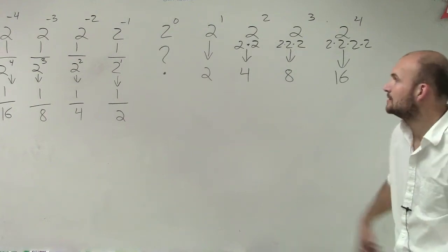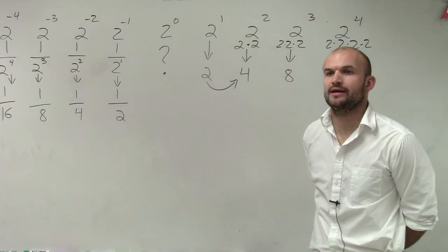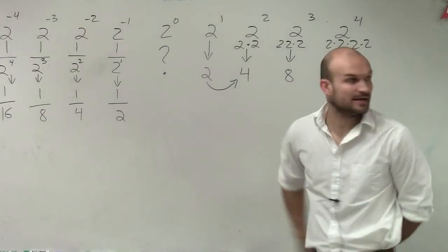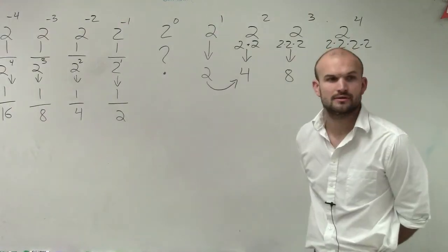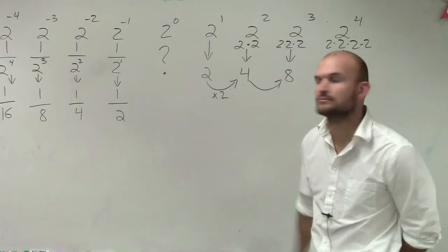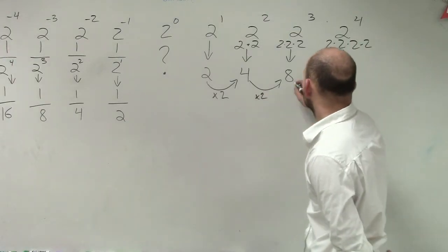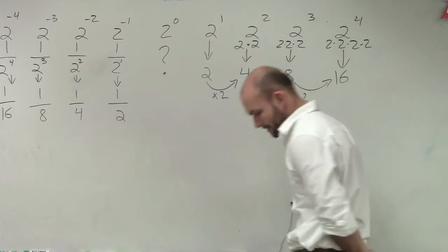To go from here to here, what am I doing? Multiplying by 2. To go from here to here, what am I doing? Multiplying by 2. Each time we're multiplying by 2.